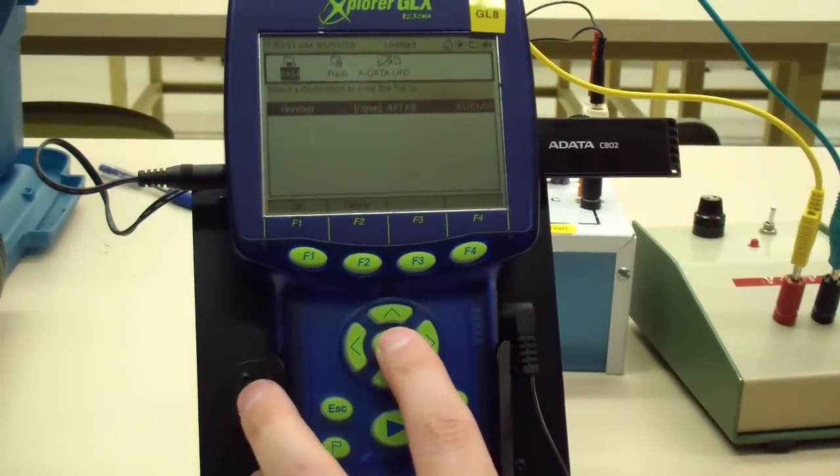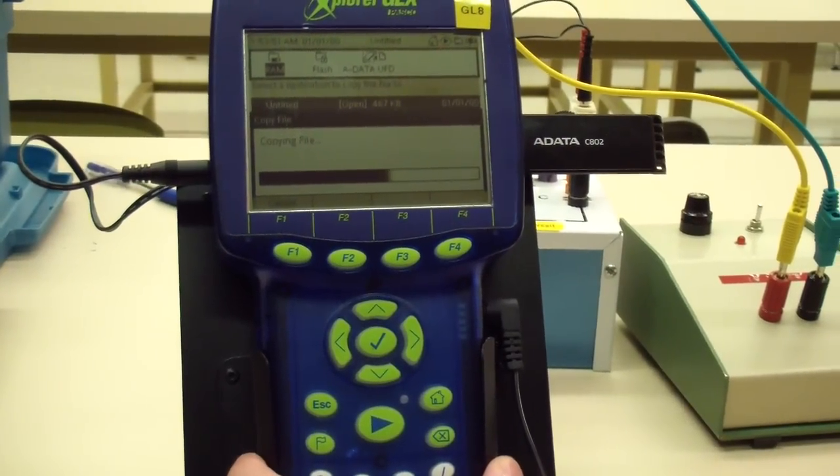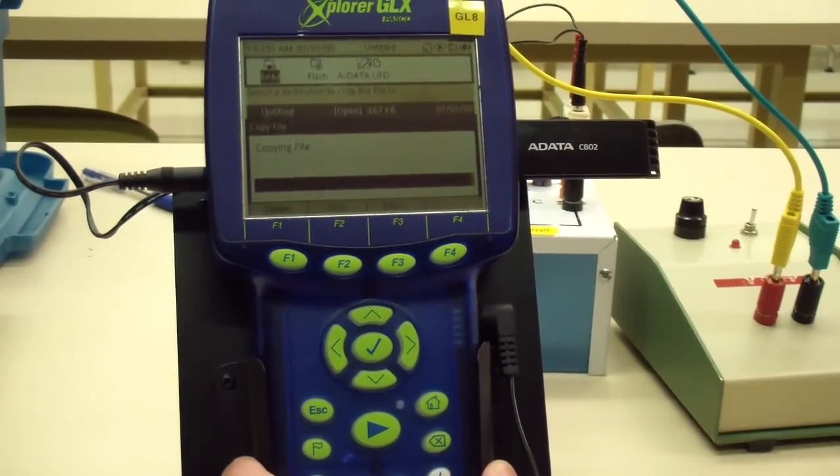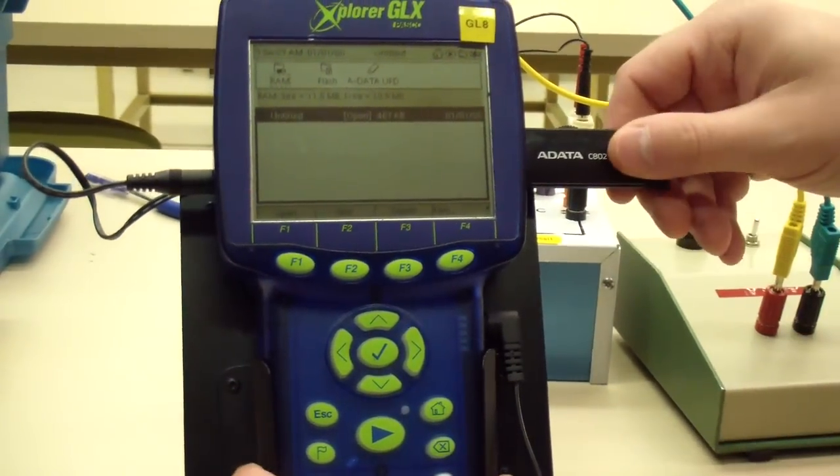Press F4 and select copy file. Press right twice and select the USB drive. You have now copied the file to your USB drive.